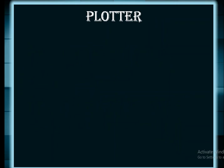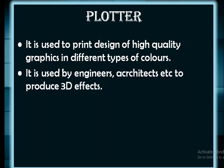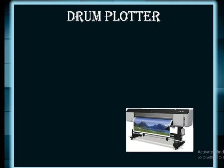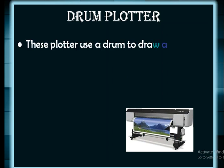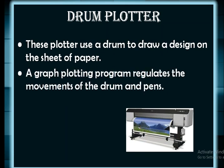The next output device is the plotter. It is used to print high-quality graphics in different colors and is used by engineers, architects, and others to produce 3D effects. It is of two types: drum plotter and flat bed plotter. Drum plotters use a drum to draw a design on the sheet of paper, and a graph plotting program regulates the movements of the drum and the pens.